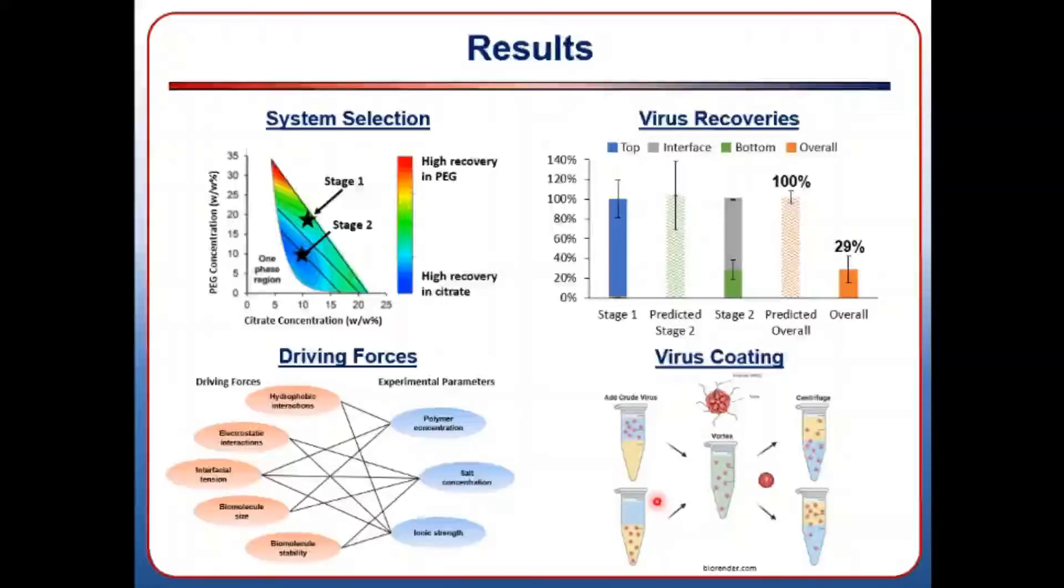Still, despite low overall recovery, this experiment provided a proof-of-concept result suggesting that it is possible that with some optimization, virus may be recovered from the polymer with the second stage of ATPS.